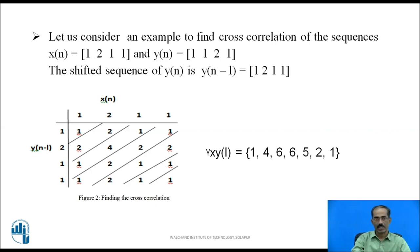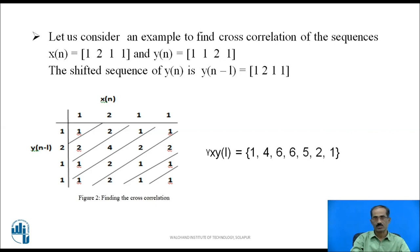The first element is 1; the second is 2 + 2 = 4; the third is 4 + 2 = 6; the fourth is also 6; the fifth is 1 + 1 = 2; and the last is 1. So the cross-correlation sequence is {1, 4, 6, 6, 5, 2, 1}. This sequence is not symmetrical about its central element.